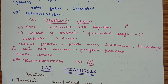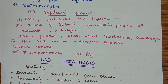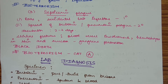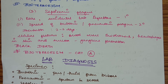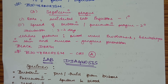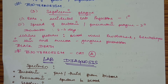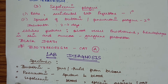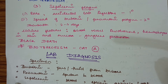The incubation period is 2 to 7 days. Clinical features include blood vessel involvement; as it is septicemic, it involves the whole blood vessels, leading to hemorrhages in the skin and mucosa and gangrene formation. This is known as black death, and it is also an agent of bioterrorism belonging to Category A.